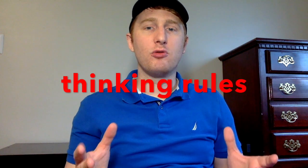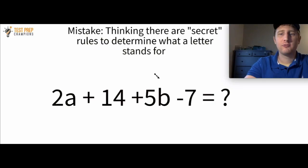Sometimes students get a little confused and they think that there are rules that determine what number a letter stands for. And this is something you'll want to avoid. So for example, some students might try to look for secret codes and secret rules. So if they got a question like this, 2A plus 14 plus 5B minus 7, they might look at this A and say, well, A is the first letter in the alphabet. So I think I have to put in one here for A.